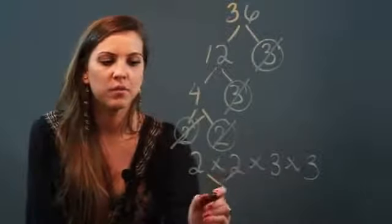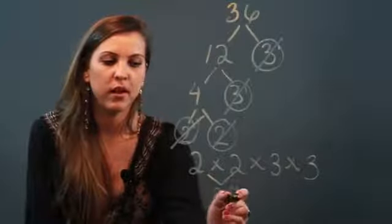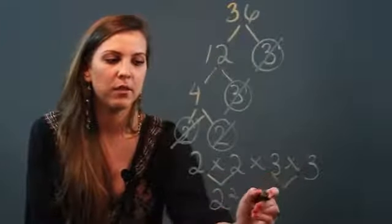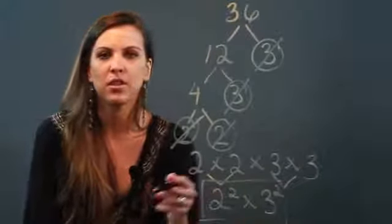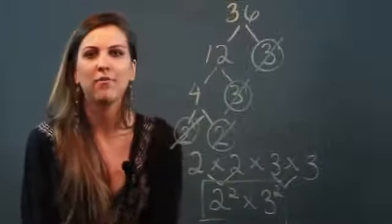So 2 times 2 can be rewritten as 2 squared, and 3 times 3 can be rewritten as 3 squared. So the prime factorization of 36 is 2 squared times 3 squared, and that's how you do prime factorization.